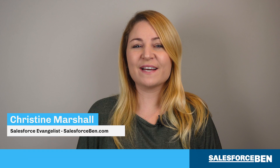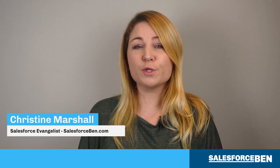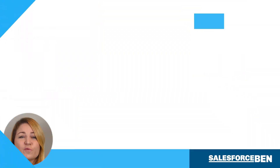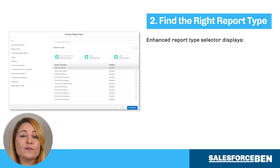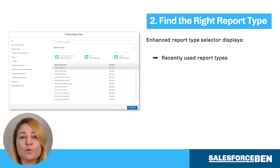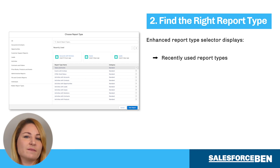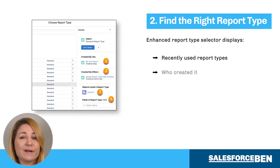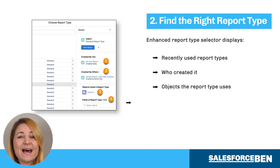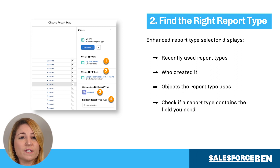Easily find the right report type for new reports you want to create using the Enhanced Report Type selector. The Choose Report Type screen will display your recently used reports, as well as a list of your report types with name and category. You can display even more details about a report type, such as who created it, the objects that report type uses, and the ability to check if a report type contains the field you need.